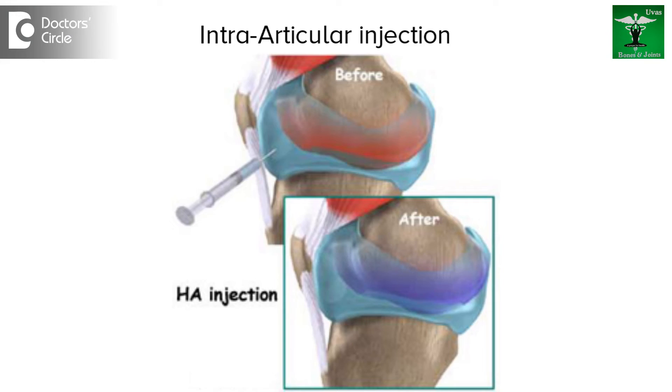Grade 2 and Grade 3 Osteoarthritis can be treated with intraarticular injections of hyaluronic acid, or intraarticular injections of steroid if the disease is fulminant — for example, in patients with rheumatoid arthritis or psoriatic arthritis which is very painful and may not respond to injections of hyaluronic acid.